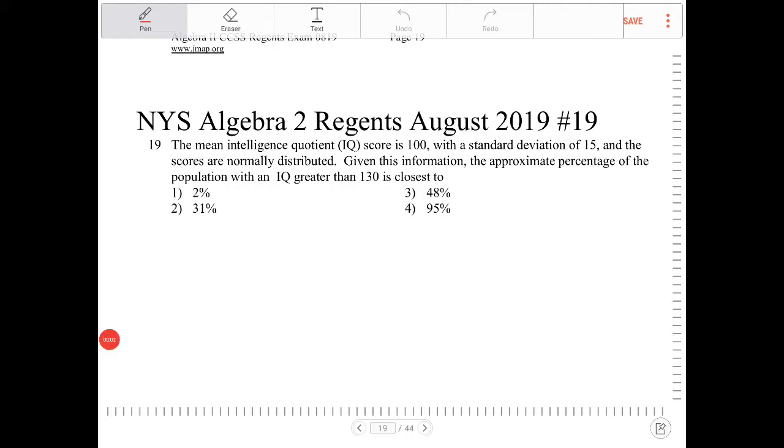The mean intelligence quotient IQ score is 100, with a standard deviation of 15, and the scores are normally distributed. Given this information, the approximate percentage of the population with an IQ greater than 130 is closest to.